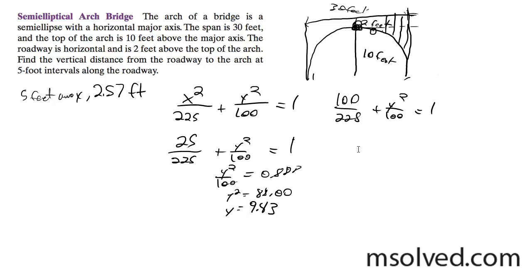So we get y squared over 100 is equal to 0.556, y squared is equal to, y is equal to 7.45.